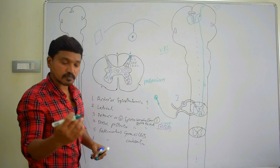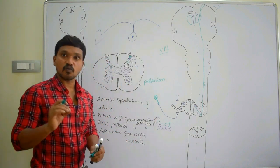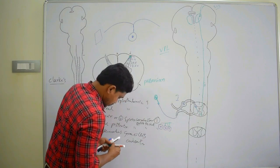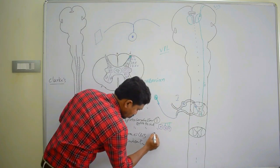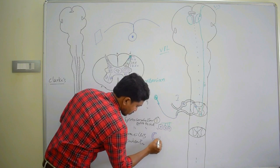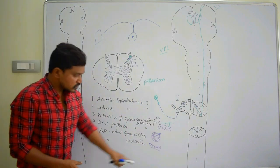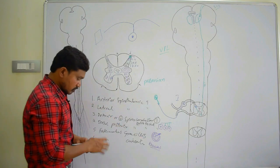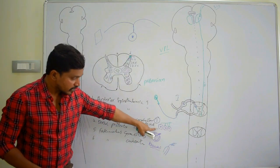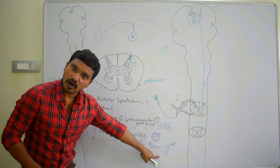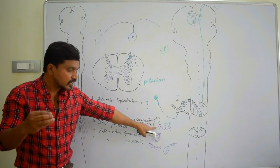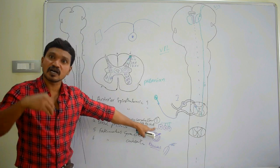For temperature, what are the receptors? There are two receptors — one for warm and another for cold. The cold receptor is the Krause's corpuscle, which detects cold stimulation. For warm, there will be Ruffini's end organs. So whether it is pain, cold, or warm, when these receptors are stimulated, that mechanical stimulus will be converted into an electrical stimulus.